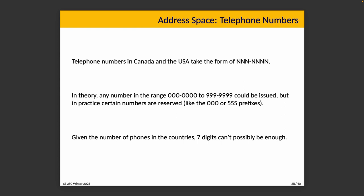In theory, any digit zero through nine is valid for each position. In practice, certain numbers are reserved — like triple-zero as a prefix, or 555, which is used for TV shows because those numbers don't actually work. And even if we filled the entire address space, that's only 10 million numbers, while Canada and the USA together exceed 350 million people. That's probably not going to work.